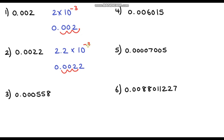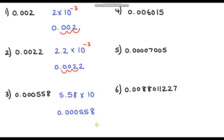Question three: 0.000558. Our base number is going to be 5.58, multiplied by 10 as always. Starting at 5.58, the decimal point is here and we're trying to get to over here — one, two, three, four places backwards — so the power is negative four.